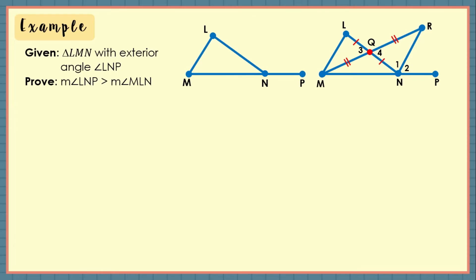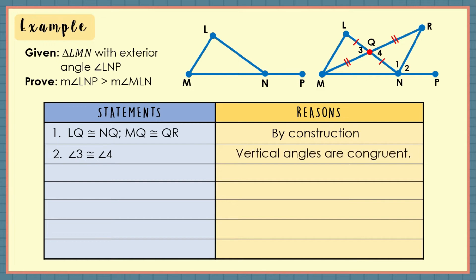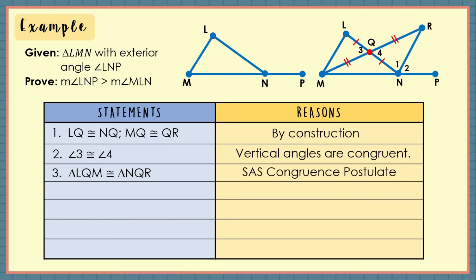Are you now ready to prove this using the two-column proof? Let us start! For our first statement, by construction, LQ is congruent to NQ and MQ is congruent to QR. Number 2, angle 3 and angle 4 are vertical angles formed as lines LN and MR intersect, and vertical angles are congruent. Number 3, based on statements 1 and 2, triangles LQM and NQR are congruent by the SAS congruence postulate. For statement number 4, angle MLN is congruent to angle 1 because corresponding parts of congruent triangles are congruent — CPCTC.